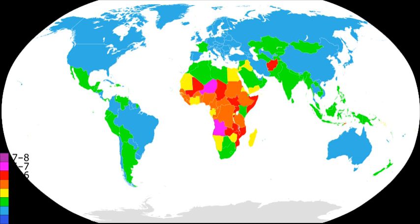'Exploring New Ethics for Survival,' by stating '...we are breeding ourselves into oblivion.' Many prominent personalities, such as Bertrand Russell, Margaret Sanger, John D. Rockefeller, Frederick Osborne, Isaac Asimov, and Jacques Cousteau, have also advocated for population planning.